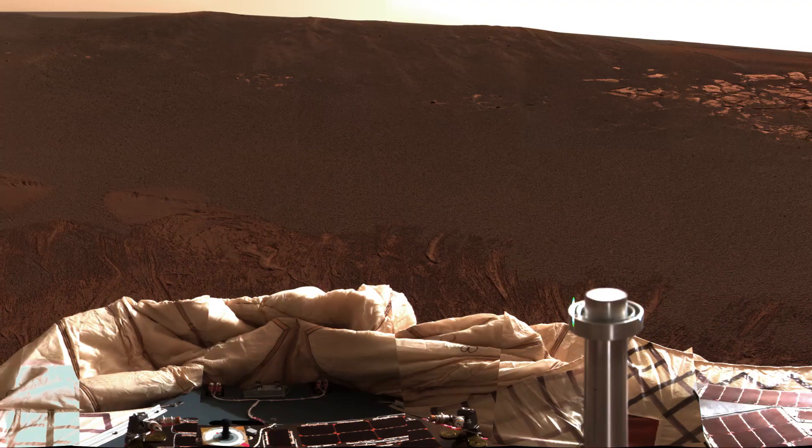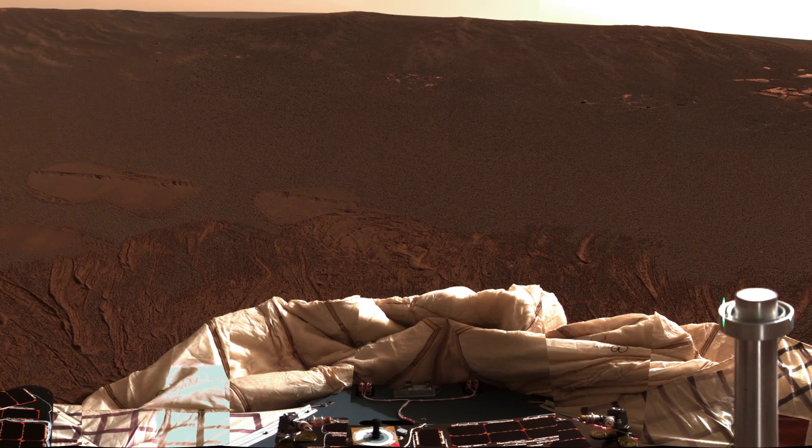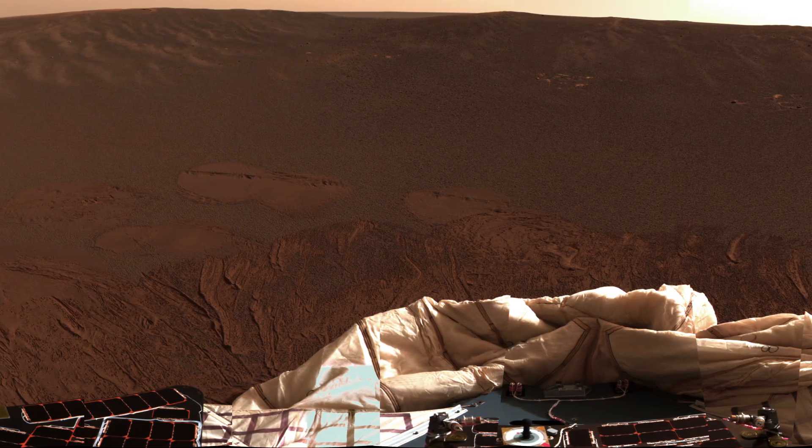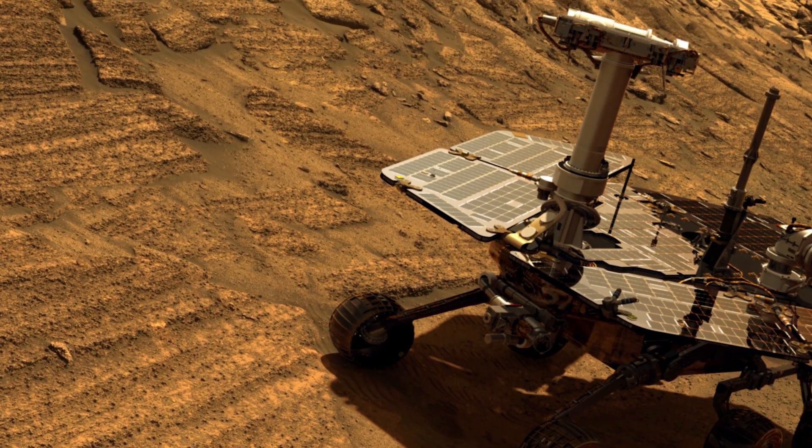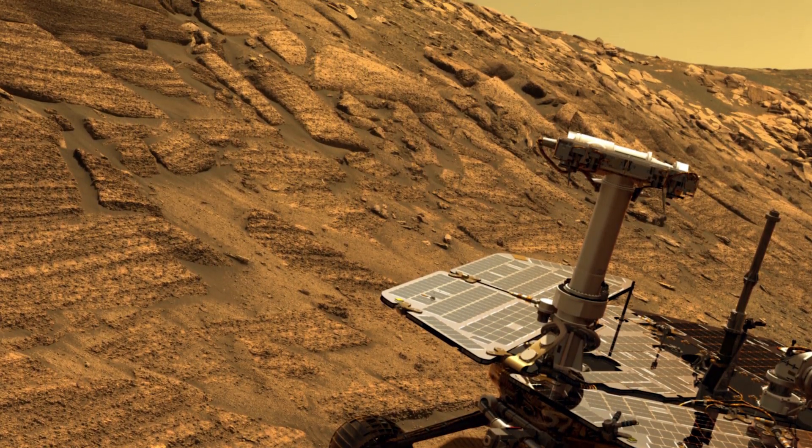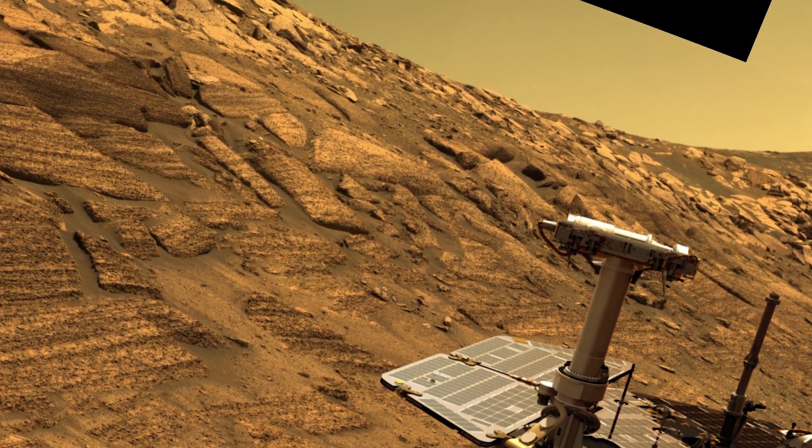With the Eagle crater that it landed in, that was actually considered to be a hole-in-one type of shot. The scientists and engineers didn't even know that that existed, and this crater was almost perfect for Opportunity because there was a wide variety of rocks inside of the crater and sedimentary layers that allowed it to do a lot of exploration just within the first month.